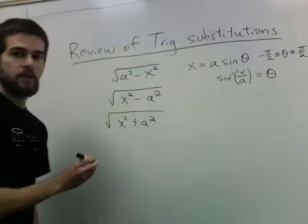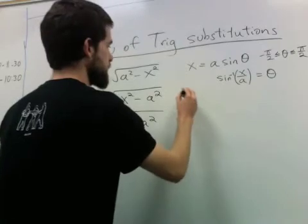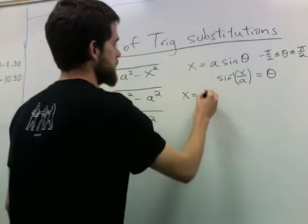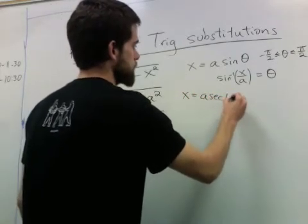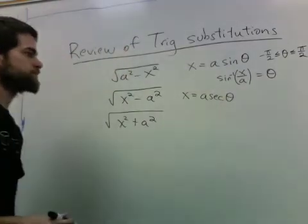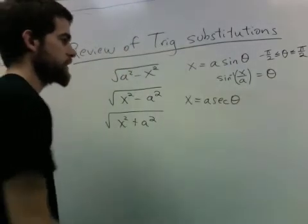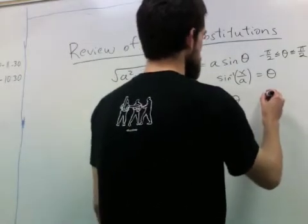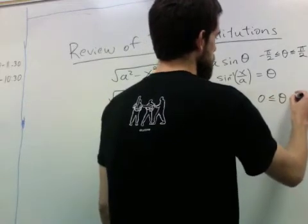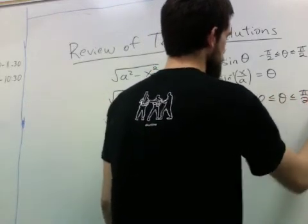With these types involving x squared minus a squared, we'll be substituting x is a secant theta, and theta will be allowed to go from 0 to pi over 2, typically.